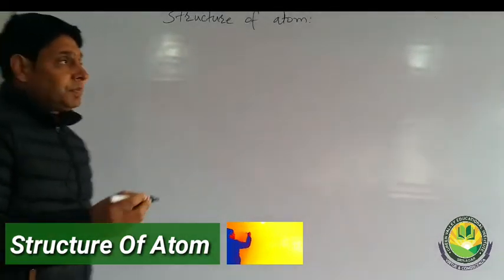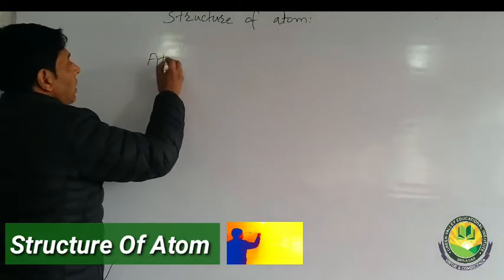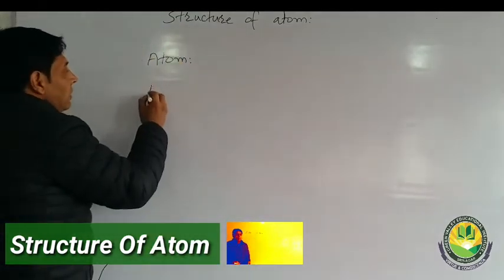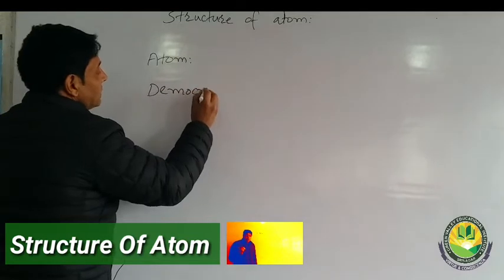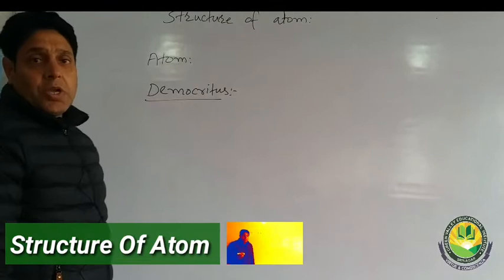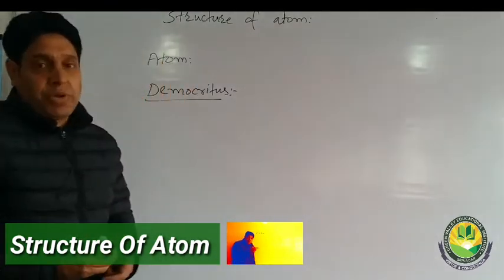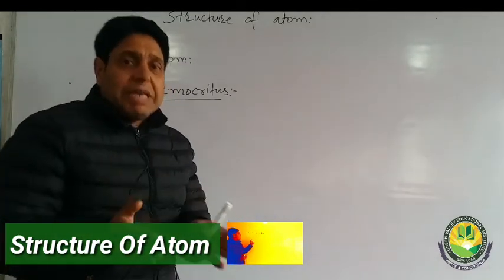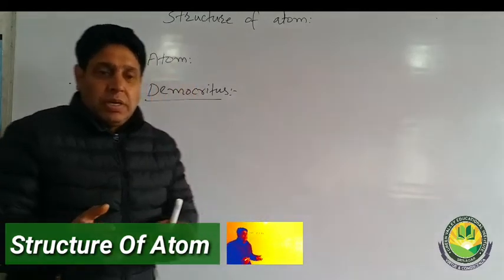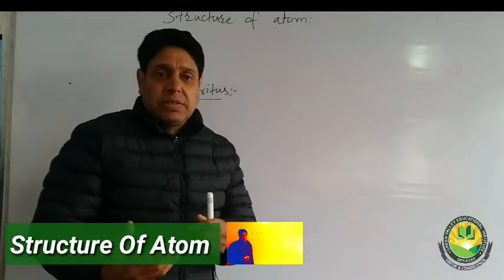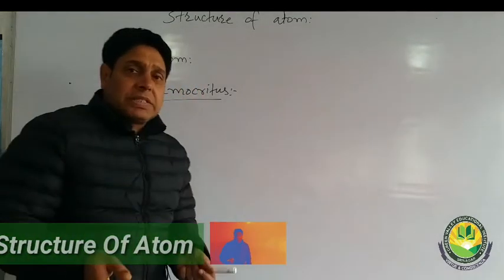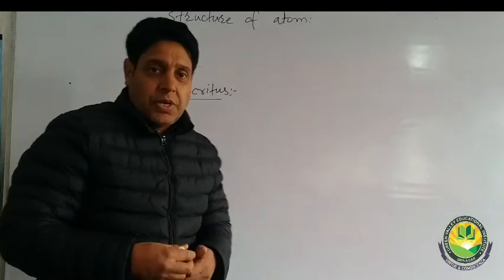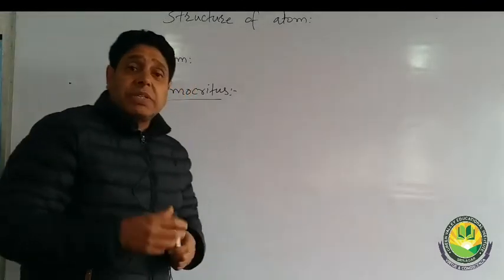The word 'atom' was first coined by Greek philosopher Democritus. We're talking of the 18th century, when Greeks were advanced in science. Therefore, most of the words in science are Greek words — they have Greek origin. Democritus was a Greek philosopher.